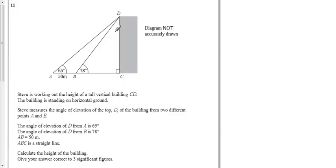Ok, tricky question here. Steve is working out the height of the building. Steve measures the angle of elevation to the top from two different places that are 50 meters apart. So he measures 65 here and 78 and we know from A to B only is 50. We want to calculate the height of the building. So we want to calculate this height.